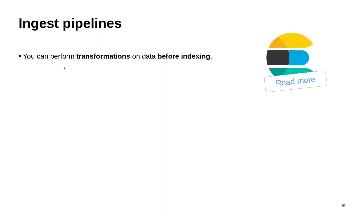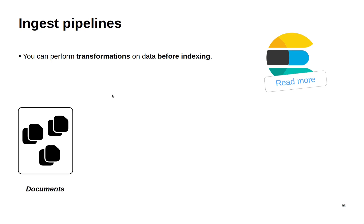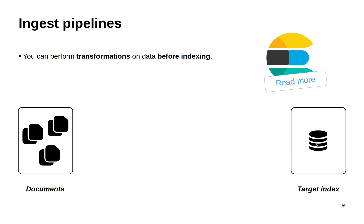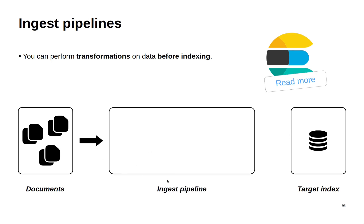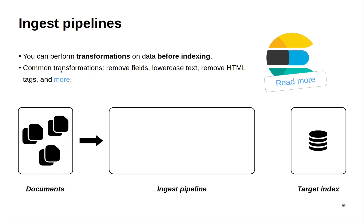A pipeline allows you to transform data before it is indexed. For example, if you have some documents and created an index, you can pass them through an ingest pipeline before indexing. Ingest pipelines can apply transformations like removing fields, converting text to lowercase. If you want to read more about the processors that Elasticsearch offers, click on this hyperlink.